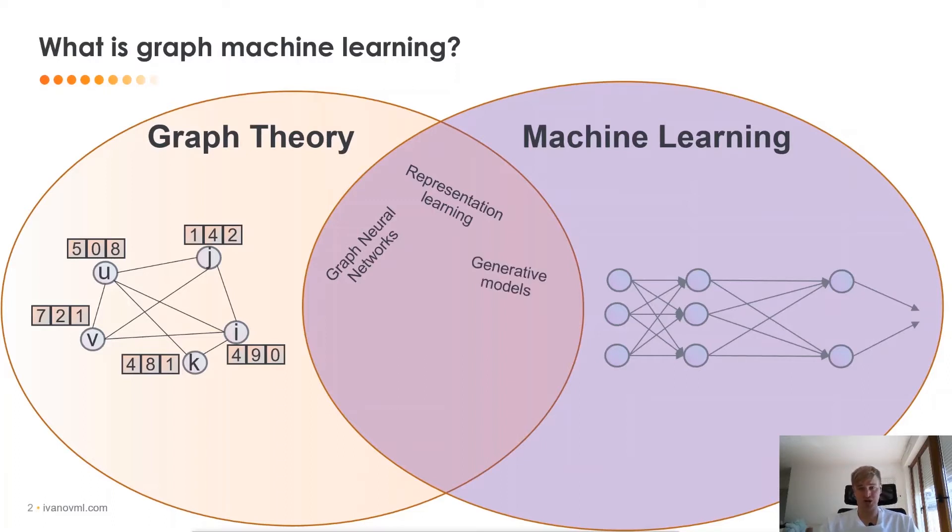It's generative models, which is how can you generate graphs with given properties. It's algorithms on graphs, of course. It's knowledge graphs, which are graphs that represent real-world knowledge. It's structure learning, which is how can you design a graph given some unstructured data. And it's applications to computer vision, NLP, and many other fields.